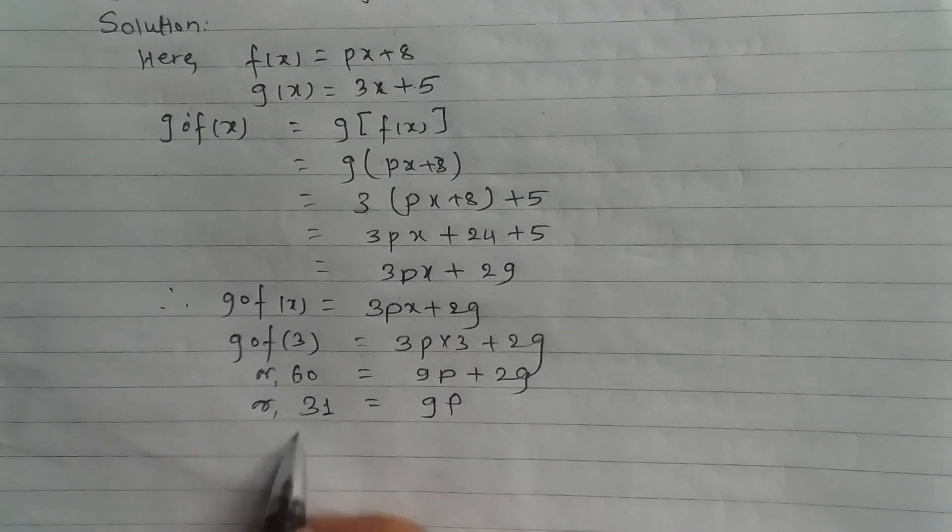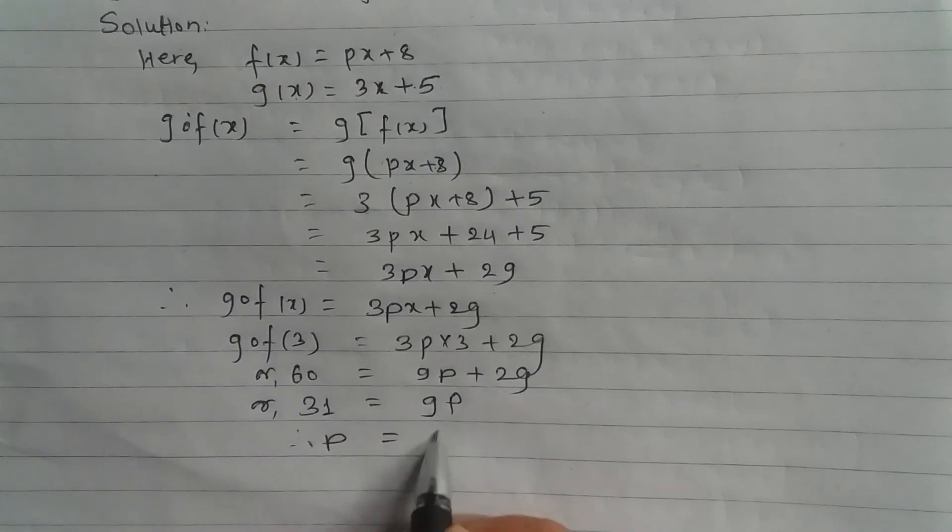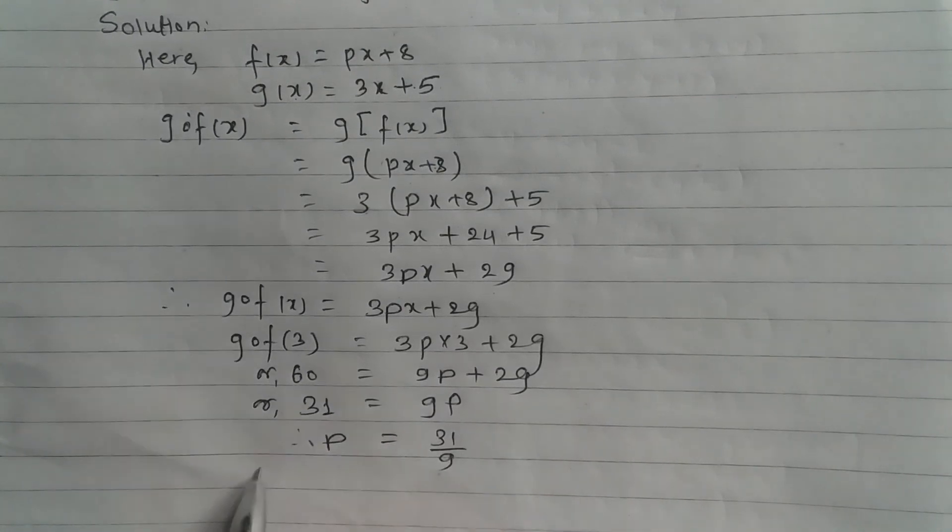So p = 31/9. The required value of p is 31/9.